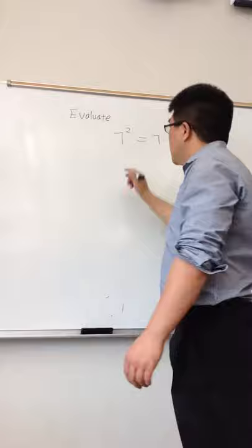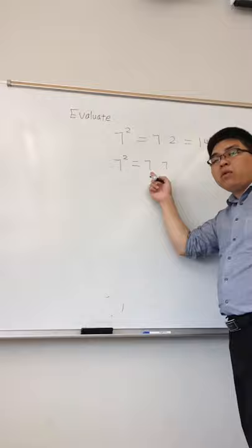Why? Because 7 squared by definition means 7 times 7, 2 factors of 7, and 7 times 7 just equal to 49.